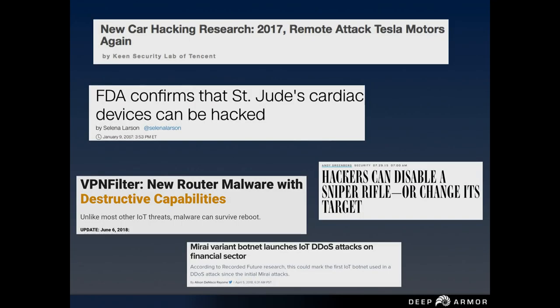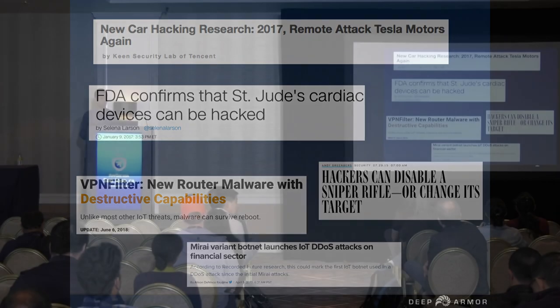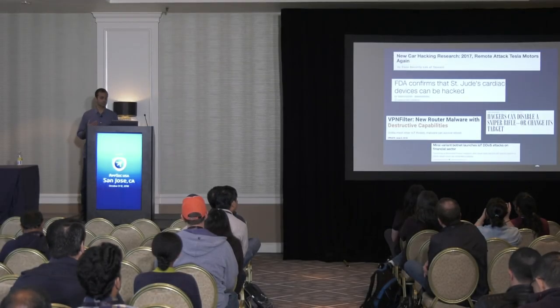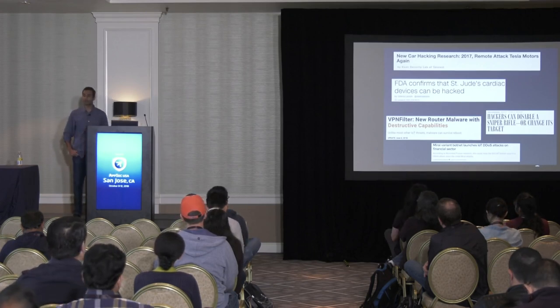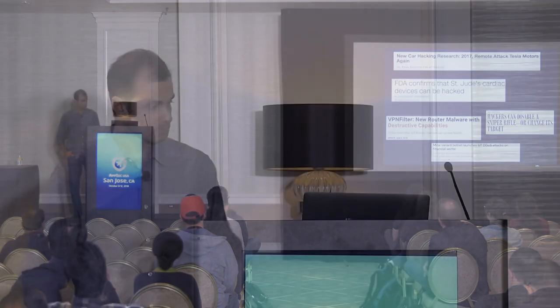There are a whole bunch of reports in this space. Some of these headlines are from the past 12 to 18 months. The Jeep hack by Charlie Miller is kind of old now — there are newer hacks on automobile platforms, medical devices, and smart devices such as smart home products and secure home gateways. There was an interesting talk about a smart rifle hack at Black Hat a couple of years ago. VPN Filter and Mirai — most of you have heard about them. The point is that attacks on IoT devices are no longer research or theory — they are actually happening.